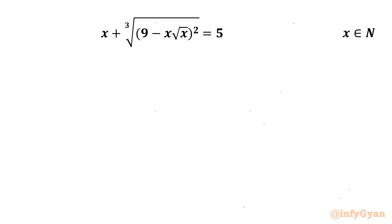Welcome back to Infigyan, my dear friends. In this video we will be solving one very interesting question from radical equations. The given equation is x plus cube root of 9 minus x root x, whole square, equal to 5, where x belongs to natural numbers.